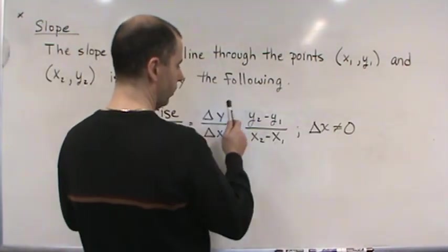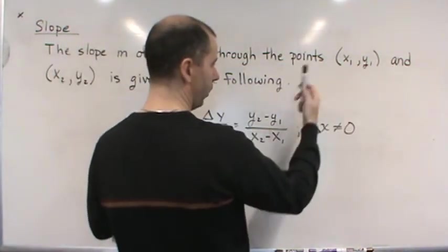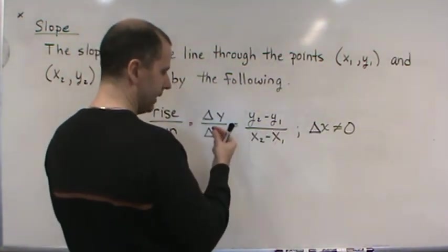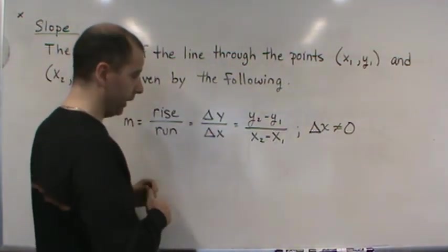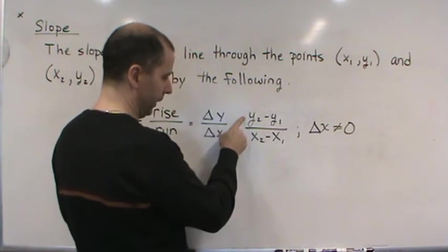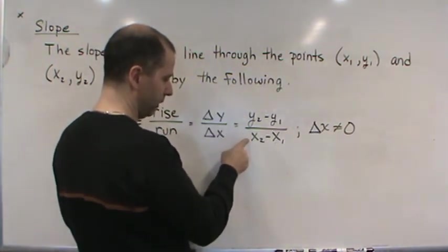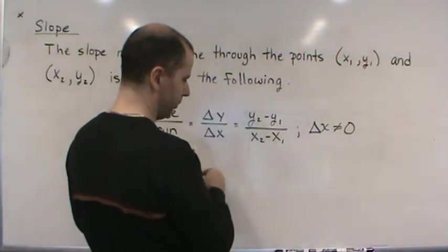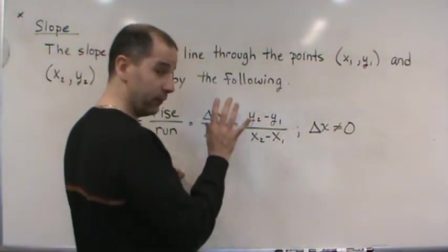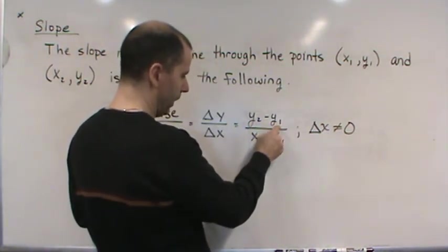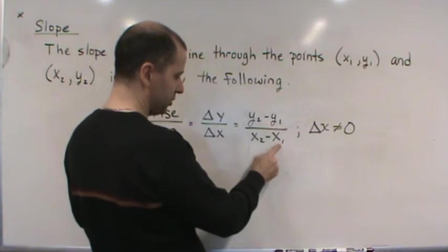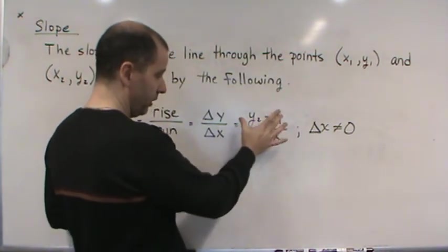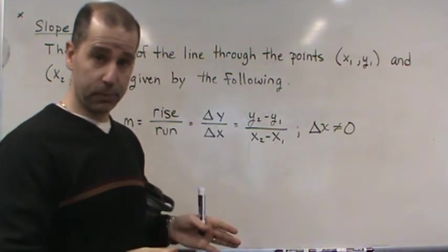Now one last thing: it doesn't matter which point you make (x₁, y₁) or (x₂, y₂), but you just have to be consistent. You've got to make sure whatever y₂ is, x₂ is matched down here. You've got to be consistent on the top and the bottom - you can't mix these up. Some students will inadvertently put y₂ minus y₁ and then put x₁ here and x₂ here, so they flip them when they're not supposed to.